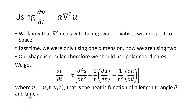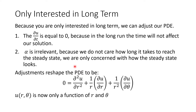You said you were only interested in long-term behavior, so we can make a few adjustments to our equation. First, the partial derivative with respect to t in the long term is zero because it's not changing with respect to time - therefore the left side of our PDE is going to be zero. Secondly, the diffusivity doesn't matter because that is dependent on time, and so we can just ignore the diffusivity since we're only looking for long-term behavior. This simplifies our equation down significantly.